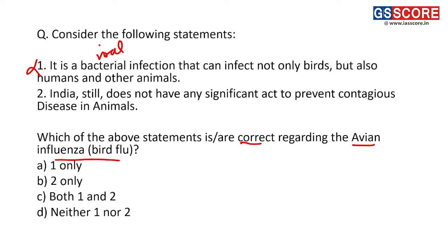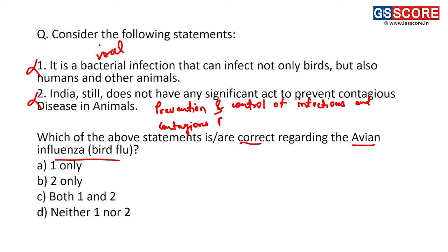Second statement: India still does not have any significant act to prevent contagious diseases in animals — this is also incorrect. India has the Prevention and Control of Infectious and Contagious Diseases in Animals Act 2009. Both statements are incorrect, so the answer is D — neither 1 nor 2.